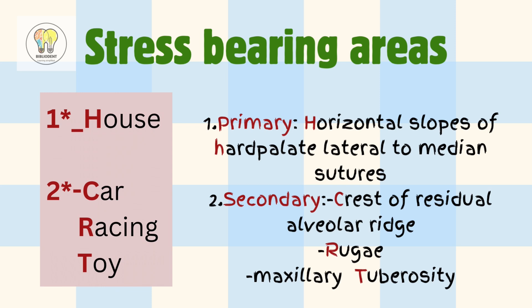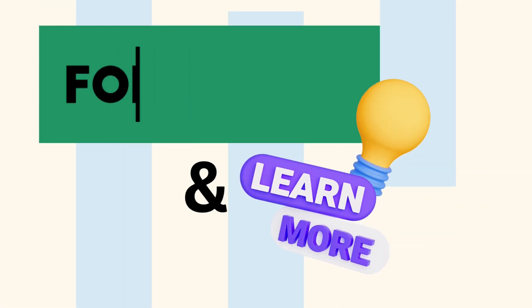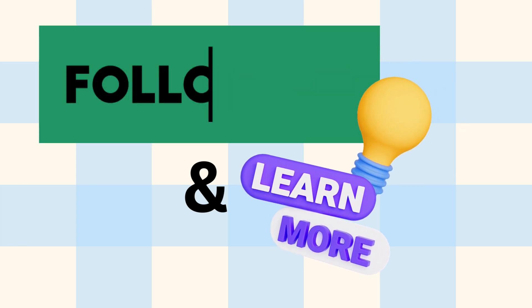Now coming to stress bearing areas, there are two types: primary stress bearing areas and secondary stress bearing areas. The mnemonic is 'primary house, secondary car racing toy.' In primary house, H is for horizontal slopes of hard palate. In secondary, C for crest of residual alveolaris, R for rugae, and T for maxillary tuberosity. Here is the diagram marking rugae, horizontal slope of hard palate, residual alveolar ridge, and maxillary tuberosity.